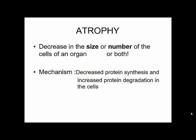Atrophy by definition is a decrease in size or number of cells in an organ — sometimes both a decrease in size and number. The basic mechanism for atrophy is decreased protein synthesis and increased protein degradation. Protein synthesis and degradation are coordinated processes regulated by signaling pathways. Any imbalance between these two can cause the cell to undergo atrophy.